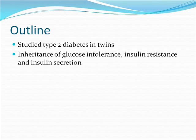This research paper involved studying type 2 diabetes in twins and relatives of the twins, as well as two specific groups of twins. The studies were based on the inheritance of glucose intolerance, insulin resistance, and insulin secretion. This was carried out so that the factors affecting the development of diabetes in the environment could be compared against genetic factors.